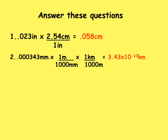Here are the answers. For the first problem, we used our conversion factor 2.54 centimeters per inch and multiplied it by the given value: 0.023 inches. Setting the problem up this way allows us to cancel the inches both above and below the division line, leaving only the desired unit, centimeters. Multiplying 0.023 times 2.54 gives us 0.058, and the only unit remaining is centimeters, which comes into the answer.